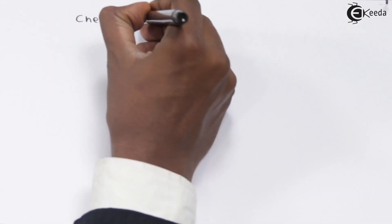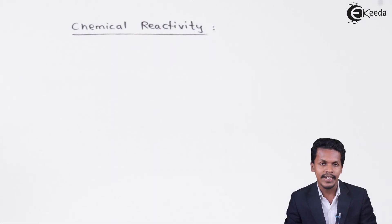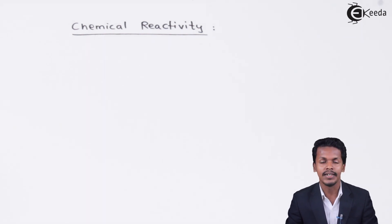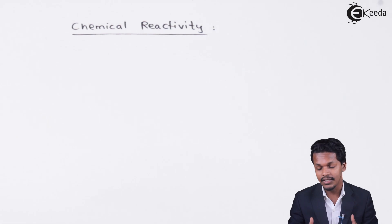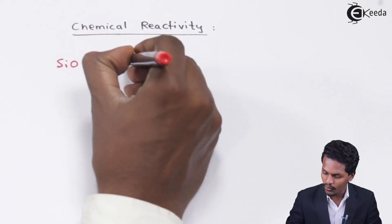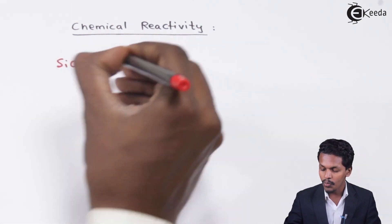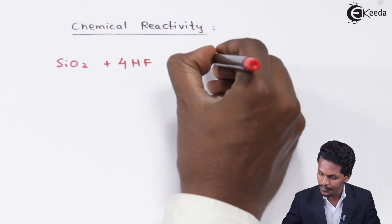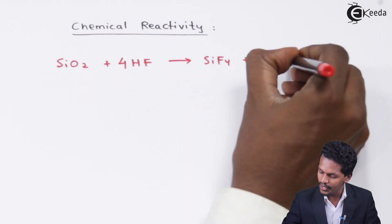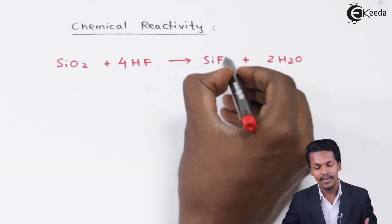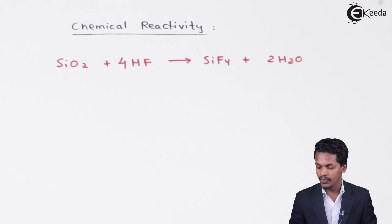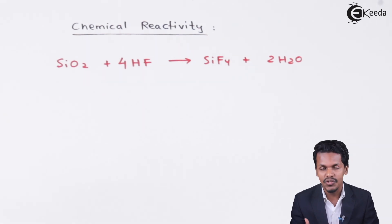Talking about the chemical reactivity of SiO2: it doesn't react with most chemicals, doesn't undergo hydrolysis, and doesn't react with acids or bases in general. But when SiO2 is treated with hydrofluoric acid, which is a very strong acid, 4 moles of HF are sufficient to convert SiO2 to SiF4 plus 2 moles of H2O. So this undergoes a substitution process and we get SiF4, or tetrafluorosilicon. That is why HF is not stored in SiO2 vessels.